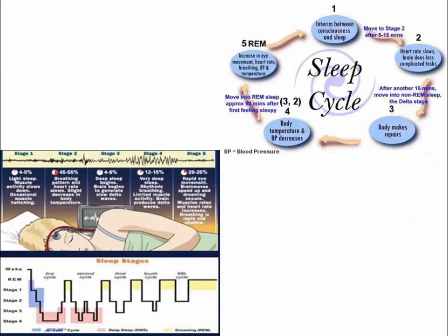The sleep cycle is important when discussing GABA as a neurotransmitter. Phase 1 is the interim between consciousness and sleep. Phase 2 involves the heart rate slowing and the brain losing complicated tasks, occurring after 5 to 15 minutes. Phase 3 occurs after 15 minutes, moving into non-REM sleep — the delta stage where the body makes repairs. Stage 4 sees body temperature and blood pressure decrease. Then comes REM sleep, marked by dreams, approximately 90 minutes after first feeling sleepy, with increases in eye movement, heart rate, breathing, blood pressure, and temperature. The total sleep cycle marks about 90 minutes.